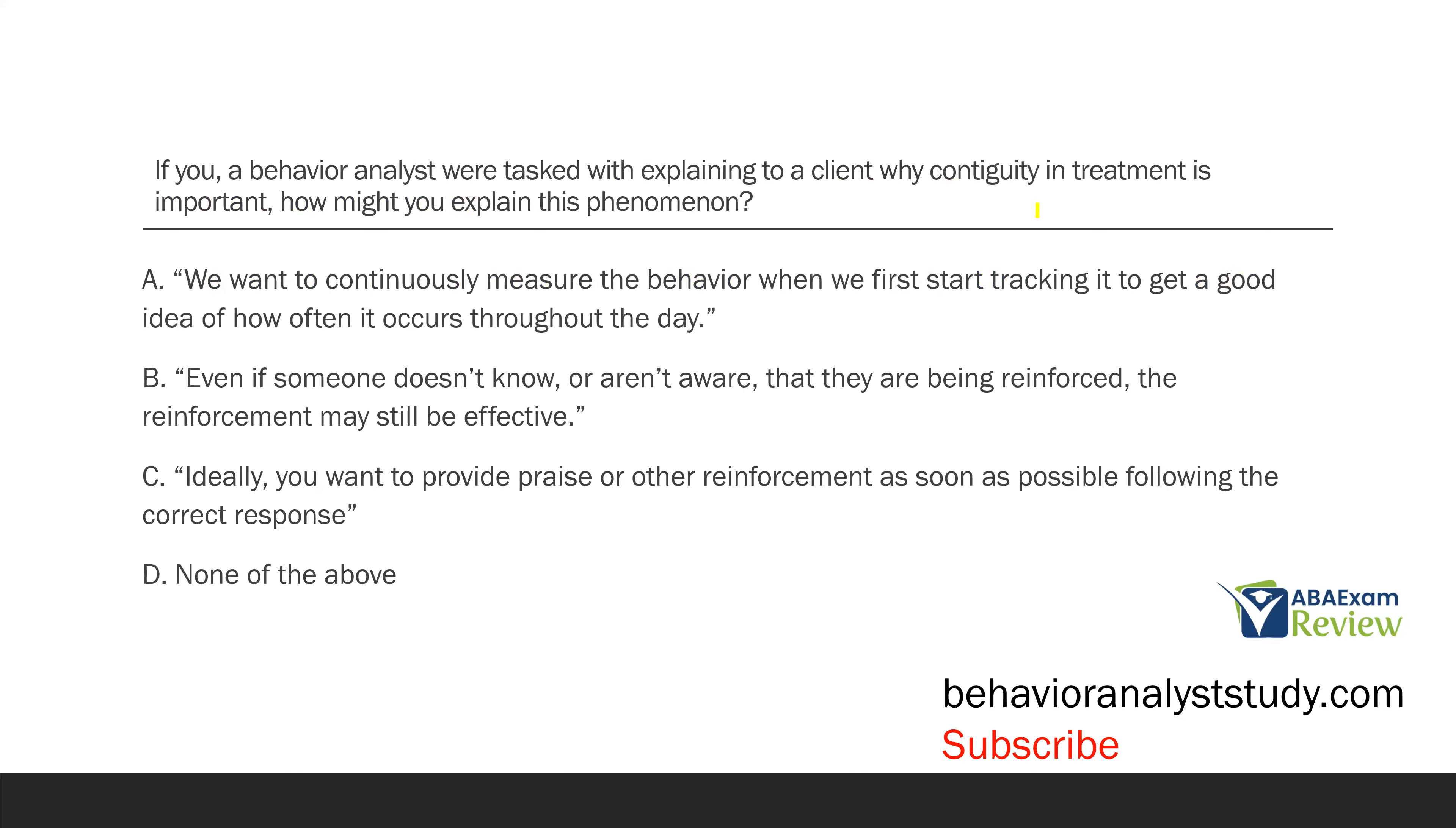If you're a behavior analyst, we're tasked with explaining to a client why contiguity in treatment is important, how might you explain this phenomenon? All right. So, you need to explain contiguity. Now, what is contiguity? Contiguity says the closeness of the consequence is important, meaning when a response occurs, we want to try to deliver the consequence as soon as possible. You don't want response, 10-second delay, then consequence. You want response, consequence every single time. That's very important, especially with reinforcement. And especially with all consequences. All consequences should be close to the response. So, how would you explain that?